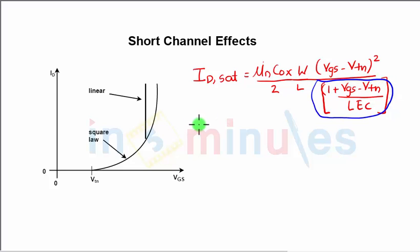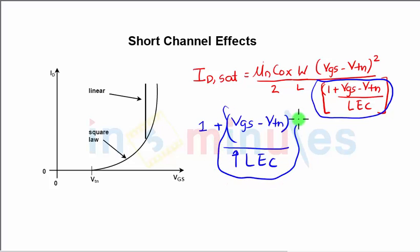That term is 1 + (Vgs - Vtn) / (L × Ec). When the length of the channel is normal—meaning it's not short, it's long—this term is going to be very small compared to 1 and can be easily ignored.